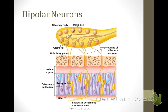Bipolar neurons contain a central soma, shown here, and two processes: a dendrite and an axon. Many bipolar neurons are sensory neurons and are found in the retina or the olfactory system, shown here.